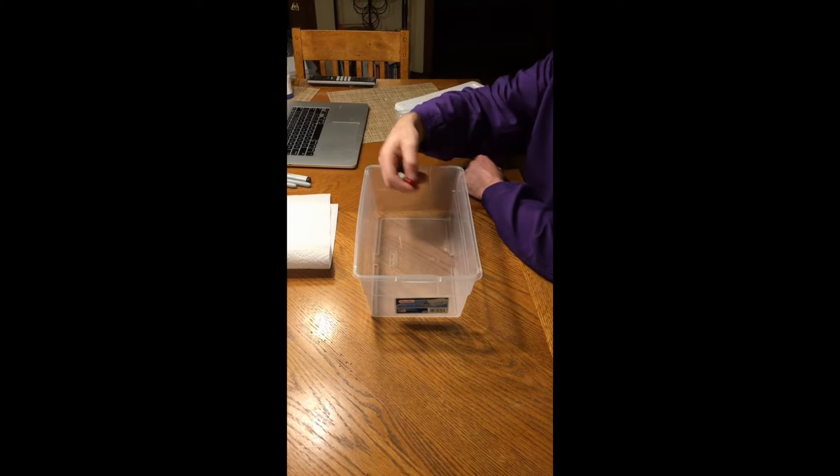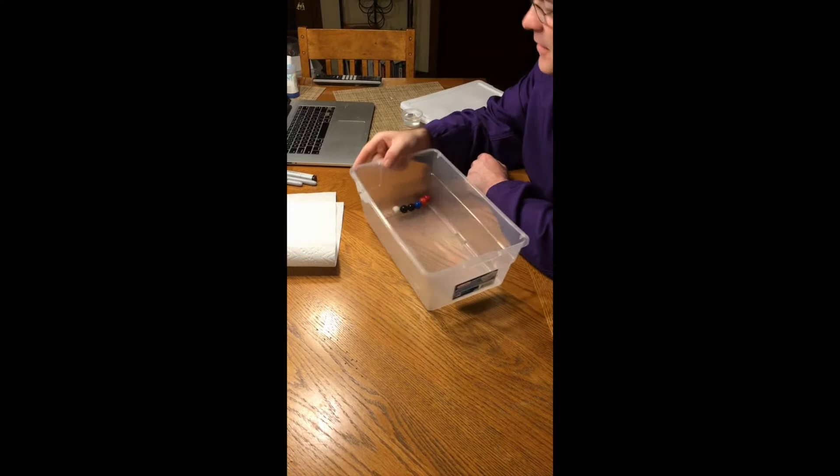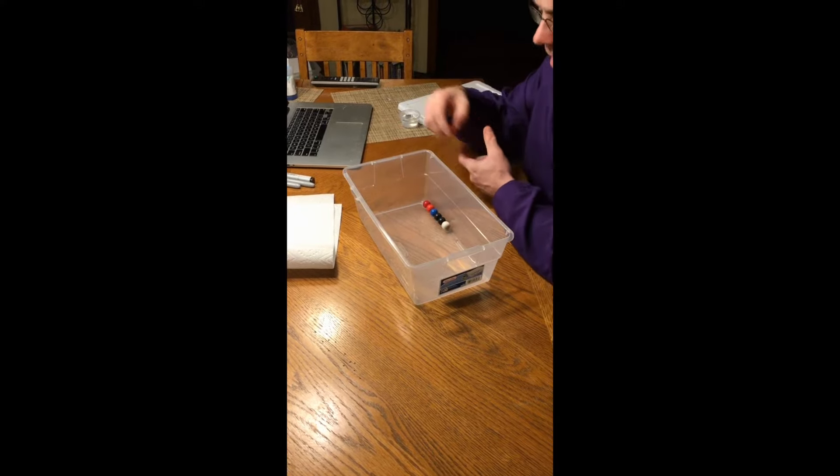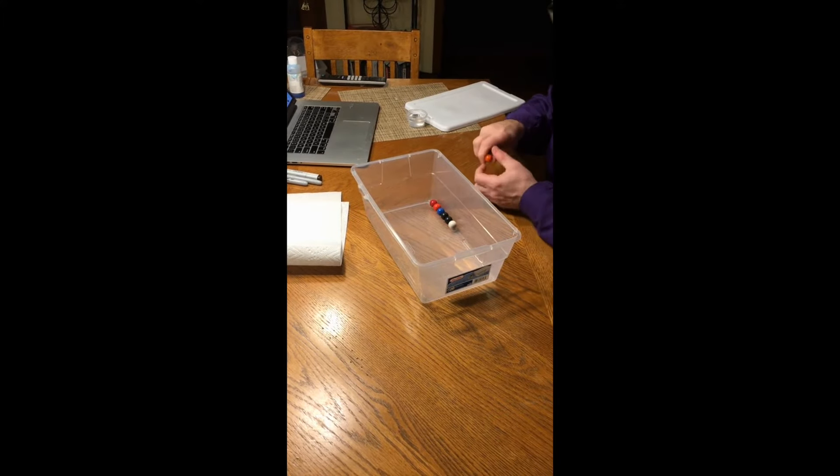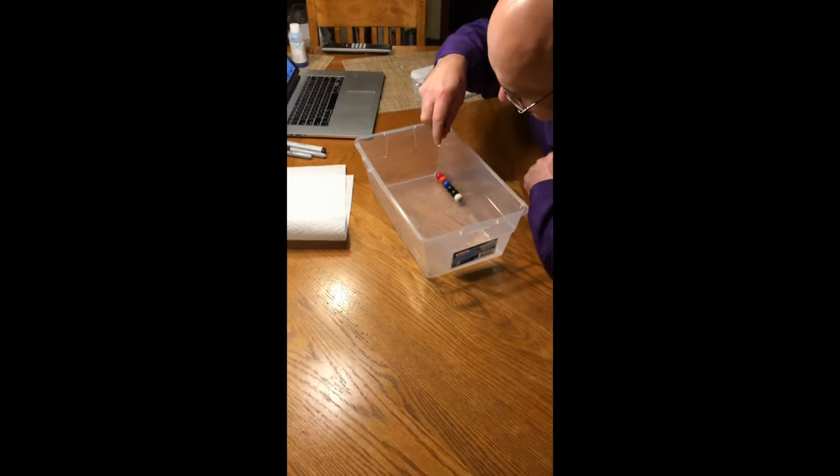For investigation 3a, students will put six marbles in their bin. They'll take their extra four marbles and drop them one at a time, an inch above the ones in the bin.